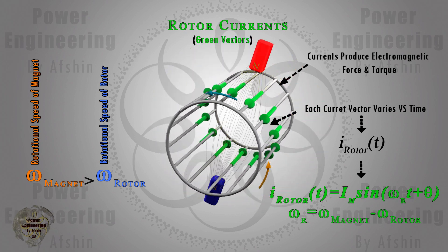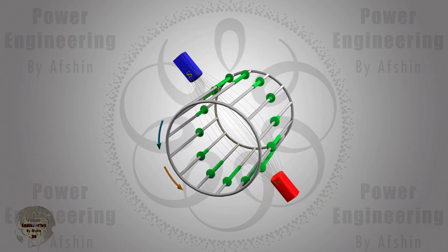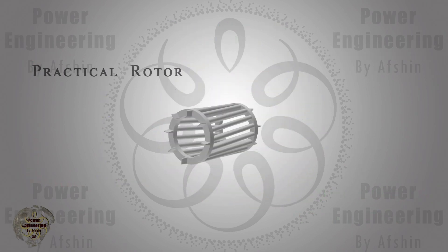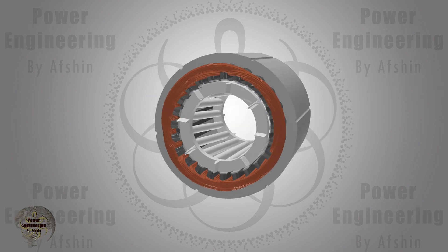In real induction machines, the rotor core material is typically aluminum or copper. To enhance torque production conditions, rotor cores are designed to have thinner bars and a greater number of them. However, the number and diameter of the bars are determined by the designer's discretion.